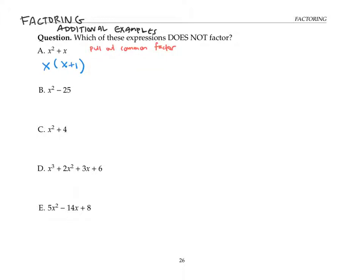The second example can be factored as a difference of two squares. Since x squared minus 25 is something squared minus something else squared, and we know that anytime we have something like a squared minus b squared, that's a plus b times a minus b. So we can factor this as x plus five times x minus five.